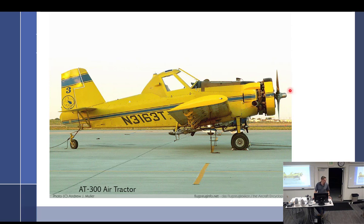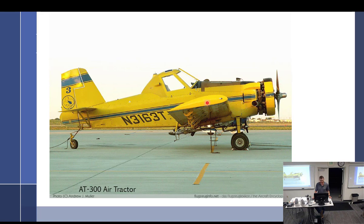This is a tractor configuration. When I say tractor configuration, it's an air tractor representing a tractor configuration — standard means it's going to pull it through the air. This part right here is going to be the part that faces the pilot, so that's called the face. And this part that's up front is called the back. So the part up front is the back and the part facing the pilot is the face.